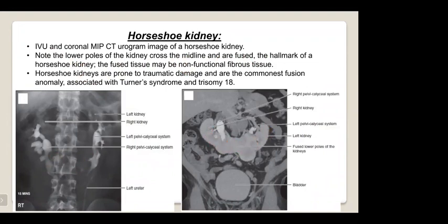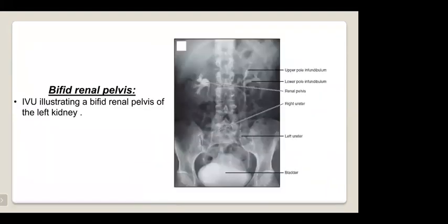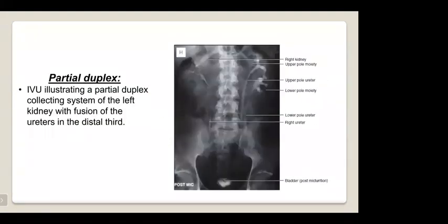A bifid renal pelvis is illustrated on IVU showing splitting of the renal pelvis on the left kidney. Another anomaly is partial duplex, where there is duplication of the collecting system of the left kidney with fusion of the ureters in the distal third; in the upper part, they appear as two separate structures.